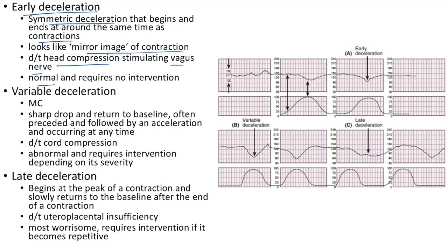This picture shows early deceleration — symmetric, begins and ends around the time of contraction, and looks like a mirror image of the contraction. It is due to head compression stimulating the vagus nerve.